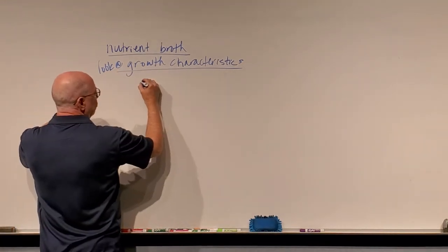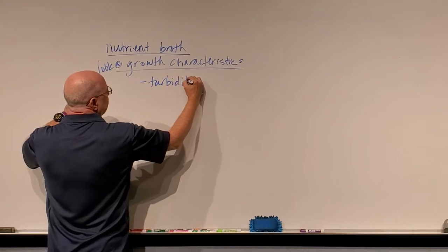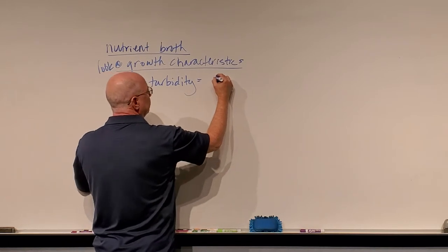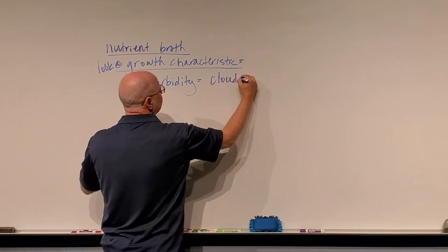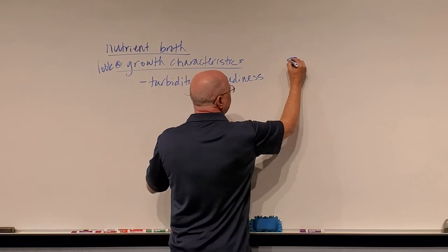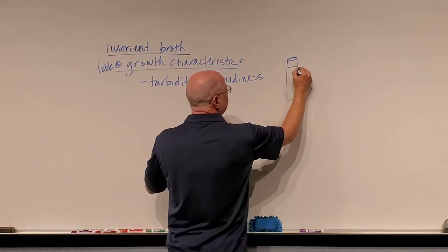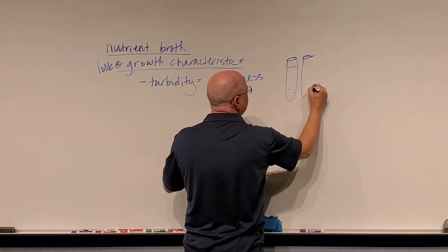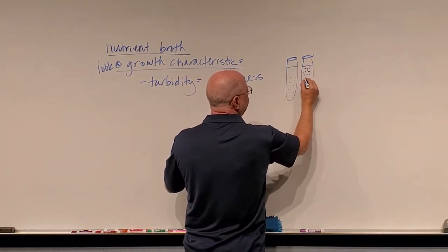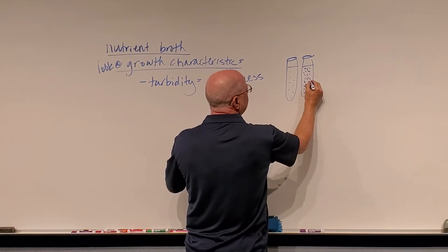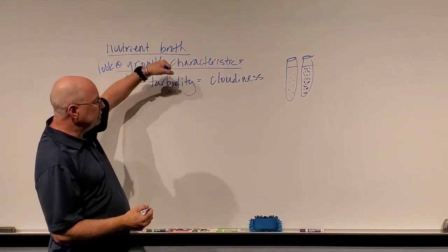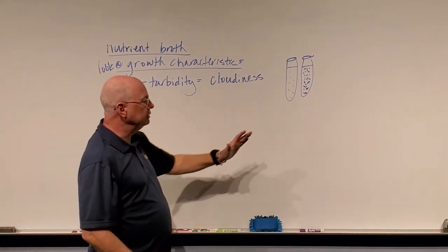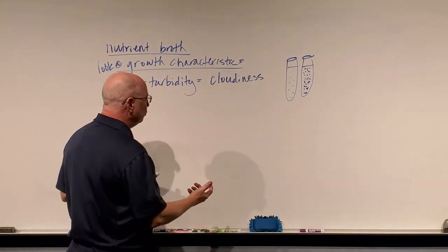One term is turbidity — when bacteria grow in broth, is the broth very turbid or not? Turbidity simply means cloudiness of the broth. If they're growing sparsely, that would be very low turbidity. If the broth ends up very cloudy and hard to see through, it has high turbidity. You can literally hold a test tube up to lettering on paper — if you can't see through it, it's very turbid.